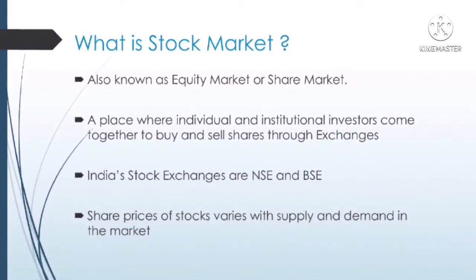In the similar case, when supply is equal to 10 and demand is equal to 100, that means there are only 10 shares available for 100 buyers. So the stock price will be increasing. This is how share prices of the stocks will vary in the stock market depending upon the supply and demand at the particular time.